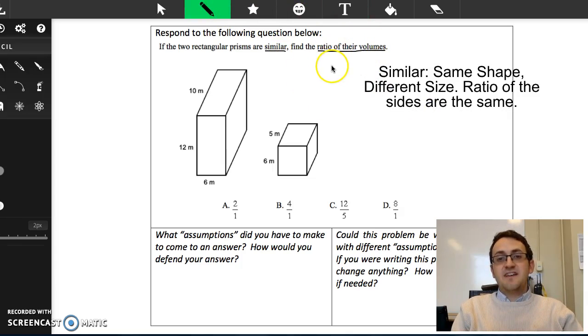Another thing that we need to be thinking about is what is the volume of a rectangular prism. So the volume is length times width times height.